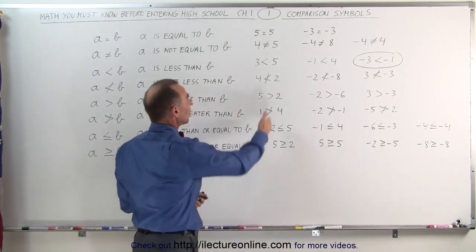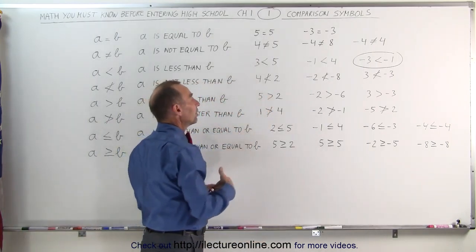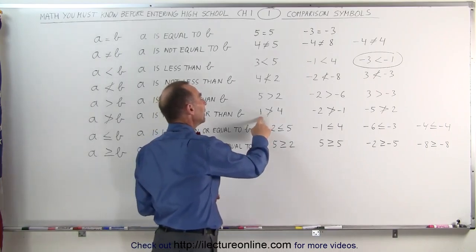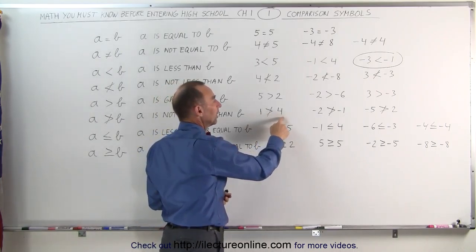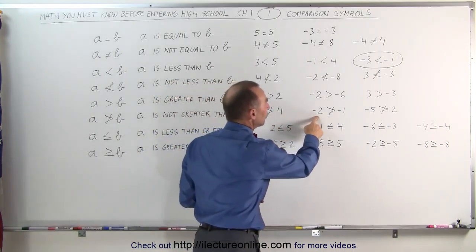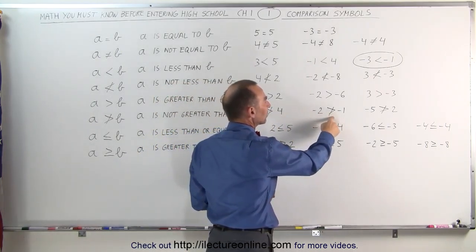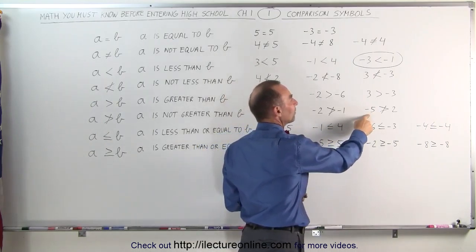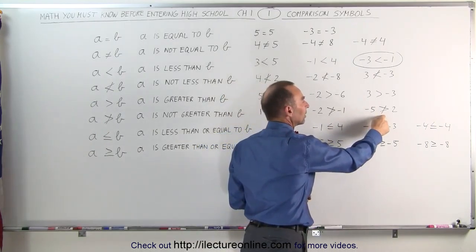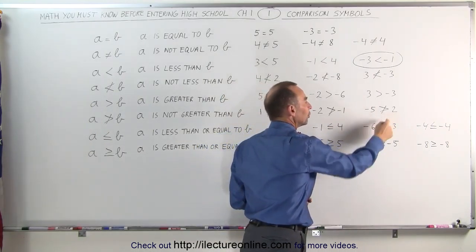If we put a line through it, then the condition is not true. 1 is not greater than 4. Negative 2 is not greater than negative 1, and negative 5 is not greater than positive 2.